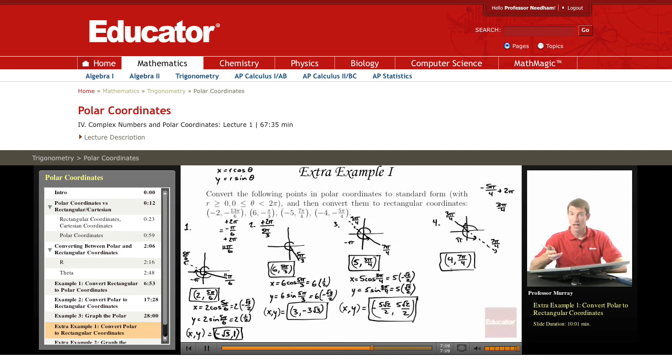Now my x and y I find using r cosine theta and r sine theta. x equals 4 cosine 7π over 4, which is 4. Now the cosine is positive because we're in the fourth quadrant. So that's √2 over 2.